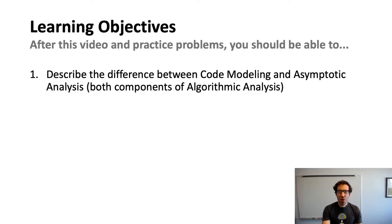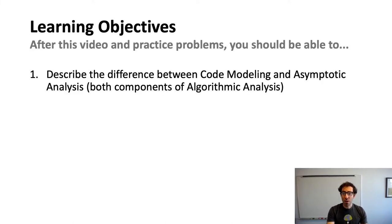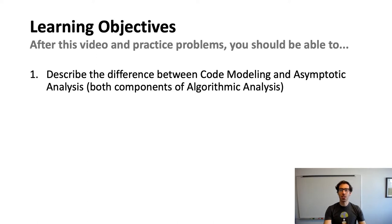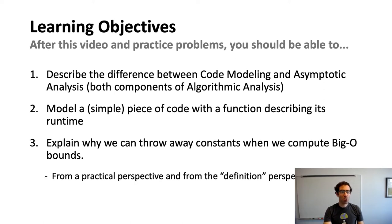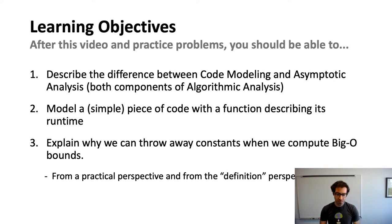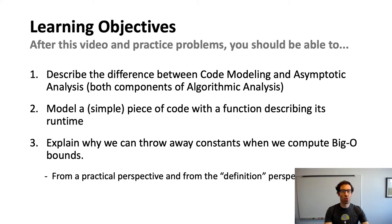Our learning objectives for this video are that you should be able to describe the difference between code modeling and asymptotic analysis, which are the two components of this algorithmic analysis technique. You'll be able to model a simple piece of code with a function that describes its run time, and you'll be able to explain why we can throw away constants when we compute big O bounds, both from a practical and definitional perspective.